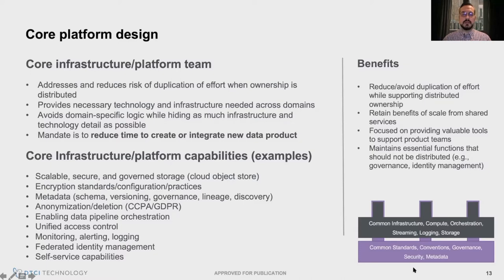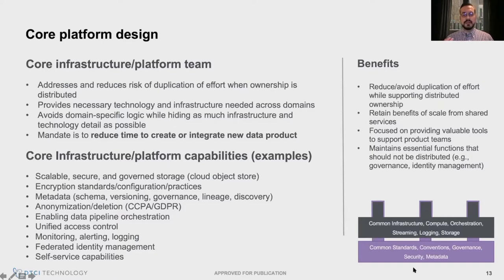The domains' focus is creating effective data products. What is the time to integrate a new data product — from 'I have a new dataset' to surfacing it? Whatever the core platform can do to shrink that time, the better. Common infrastructure components include compute, orchestration, streaming, logging, storage, common standards and conventions, governance, security, and metadata. These are the sorts of things the core platform can take off the plate of other domains.